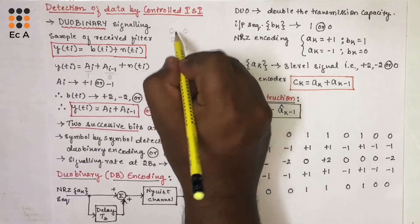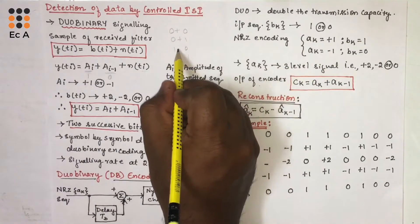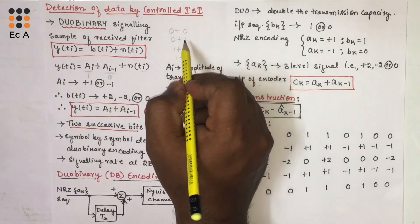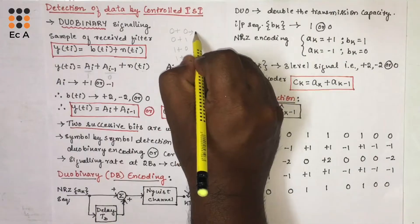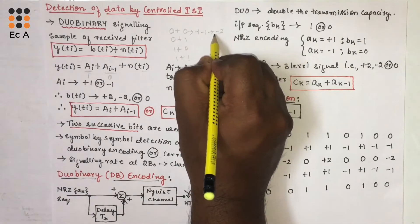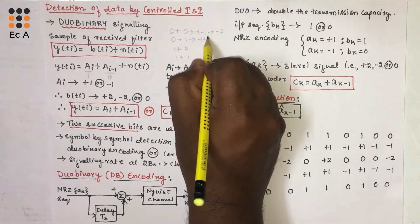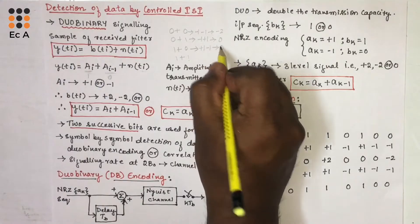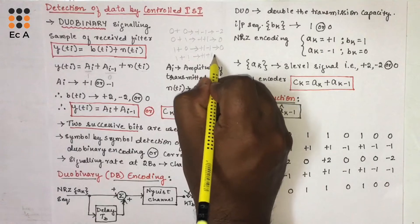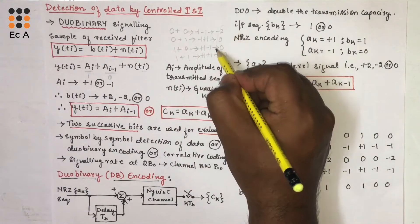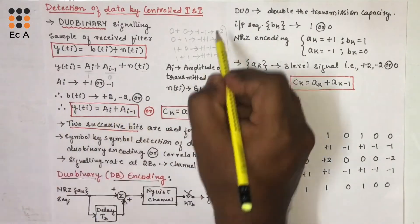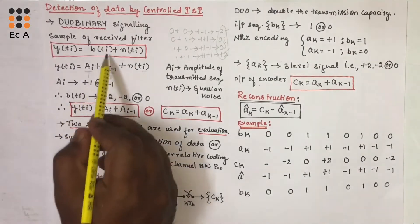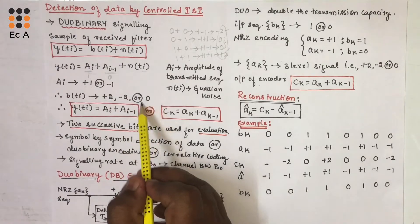It is the addition of two successive bits, so it can be the addition of 0+0, 0+1, 1+0, or 1+1. Since 0 is represented as -1 and 1 is represented as +1, we get: (-1)+(-1) = -2; (-1)+(+1) = 0; (+1)+(-1) = 0; and (+1)+(+1) = +2. So B(Ti) can have the amplitude value +2, -2, or 0.